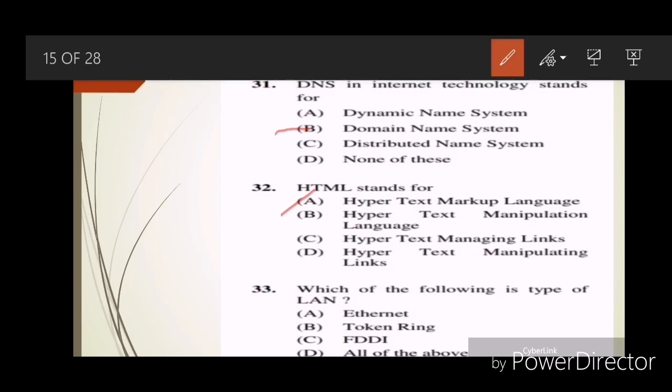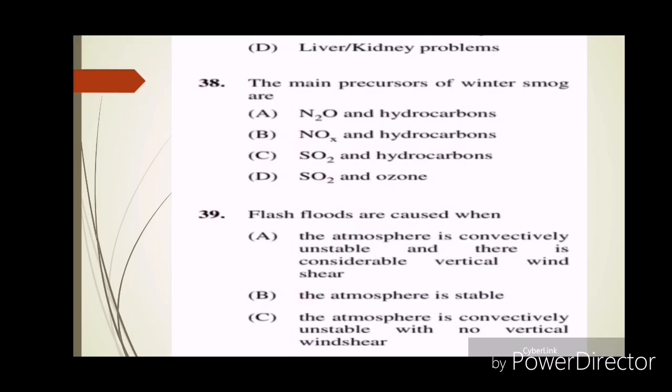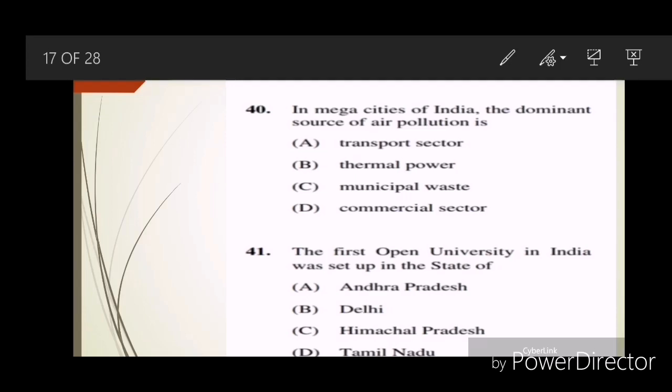Question thirty-nine: Flash floods are caused when? Answer A, the atmosphere is convectively unstable and there is considerable vertical wind shear. Question forty: In mega cities of India, the dominant source of air pollution is? Answer C, municipal waste. Question forty-one: The first open university in India was set up in the state of? Answer A, Andhra Pradesh.